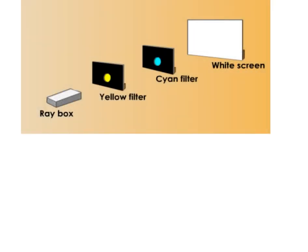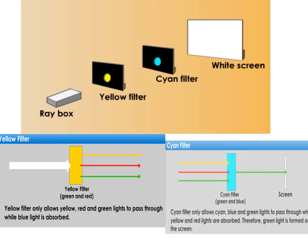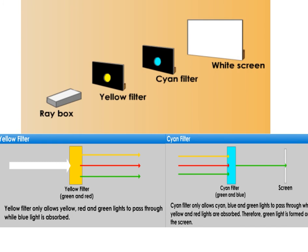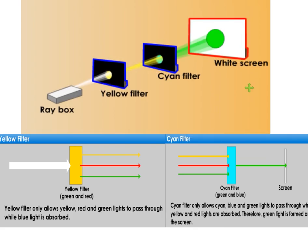What can you see on the screen? The yellow filter only allows yellow, red, and green lights to pass through, while blue light is absorbed. The cyan filter only allows blue and green lights to pass through, while yellow and red lights are absorbed. Therefore, green light is formed on the screen.